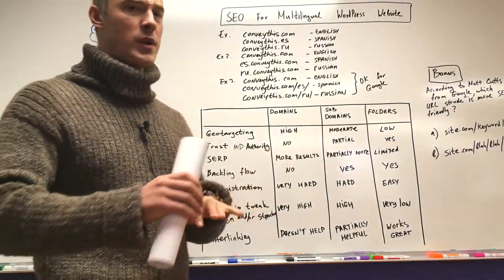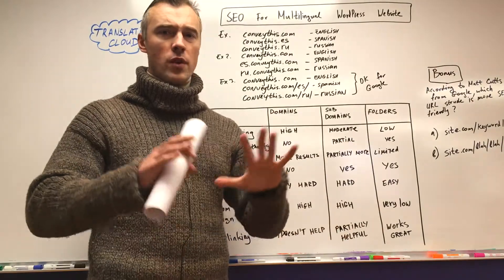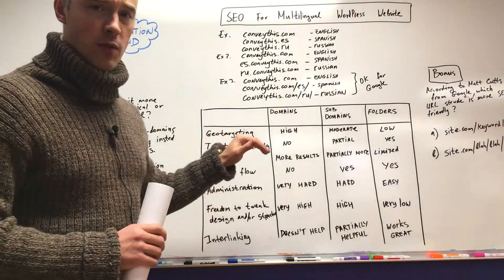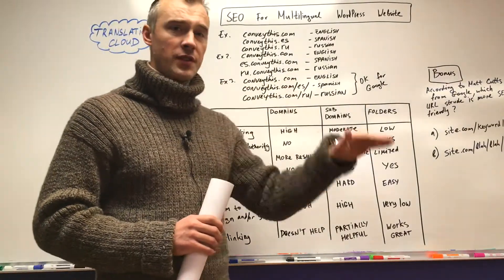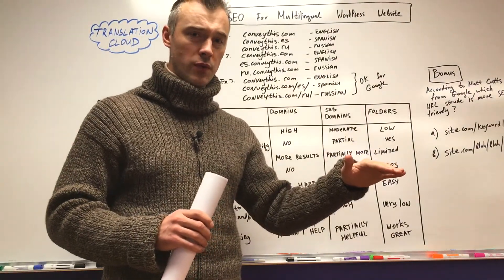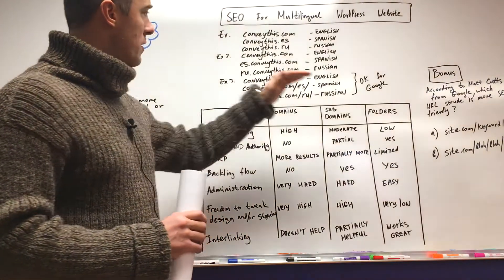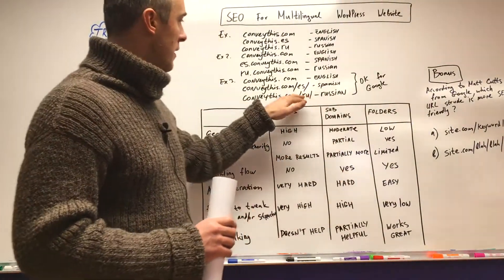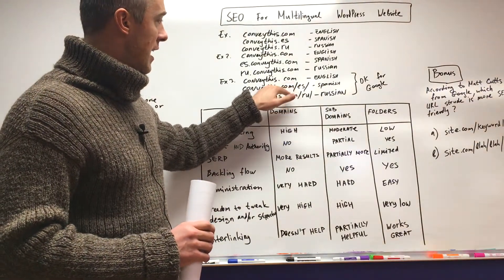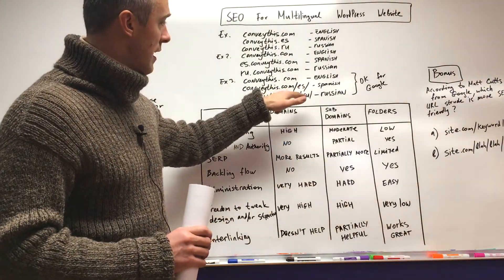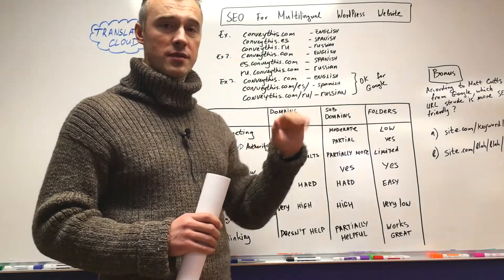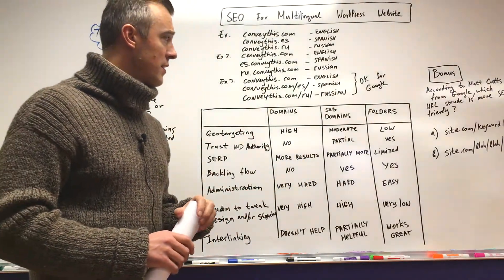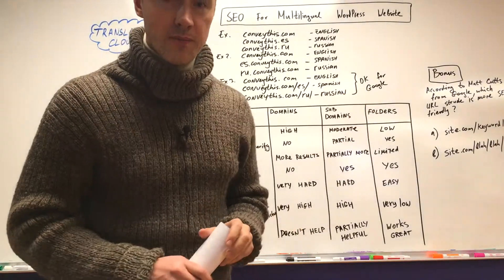Lastly, example number three: the folder approach. We don't buy anything — no extra domains, no extra setup. We just go with subfolders. Our English version stays the same in the root folder, but our Spanish and Russian versions go into subfolders: /es/ for Spanish and /ru/ for Russian. This is an acceptable approach for Google.